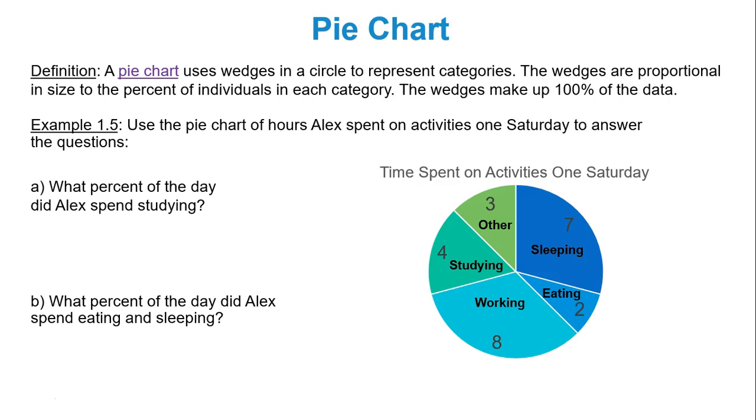Pie charts use wedges in a circle to represent categories. The wedges are proportional in size to the percent of individuals or items in each category. The wedges do make up 100% of the data. My entire circle represents 100%.